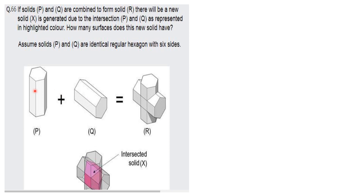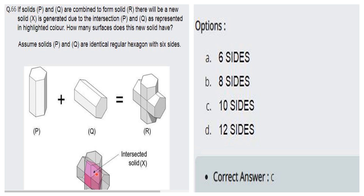The next question: if solids P and Q are combined to form solid R, a new solid X is generated at the intersection highlighted in pink. How many surfaces does this new solid have? P and Q are identical regular hexagonal prisms with six sides. If we count the surfaces of the intersected solid X carefully from the figure, we get ten surfaces. So the correct answer is ten sides.